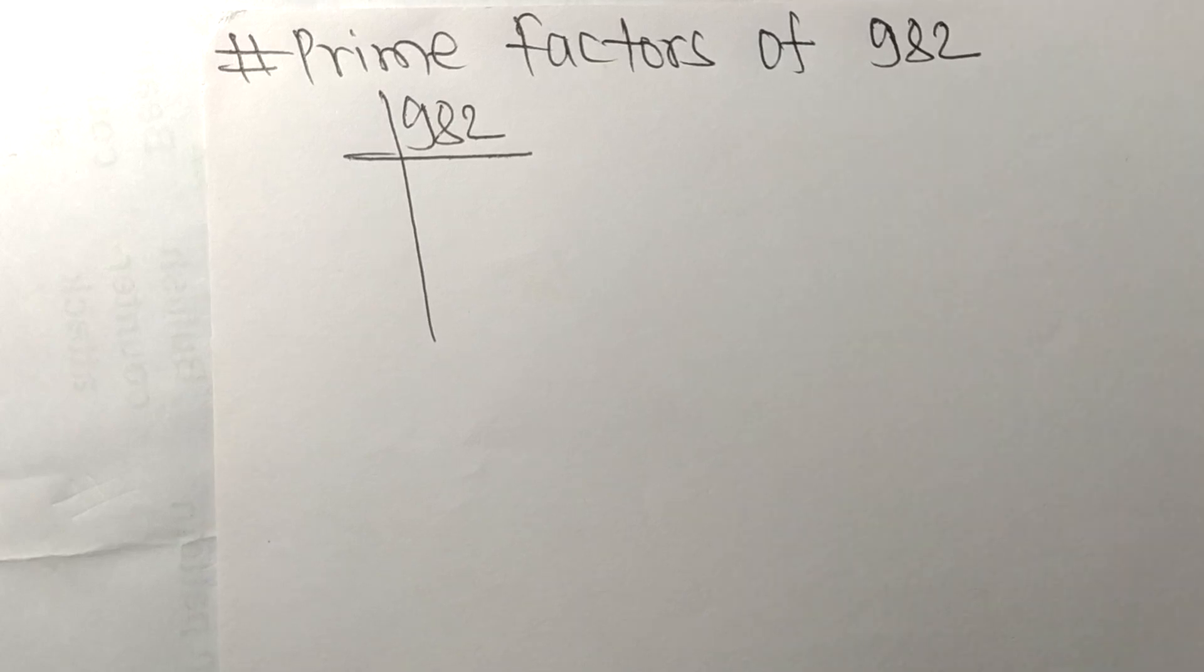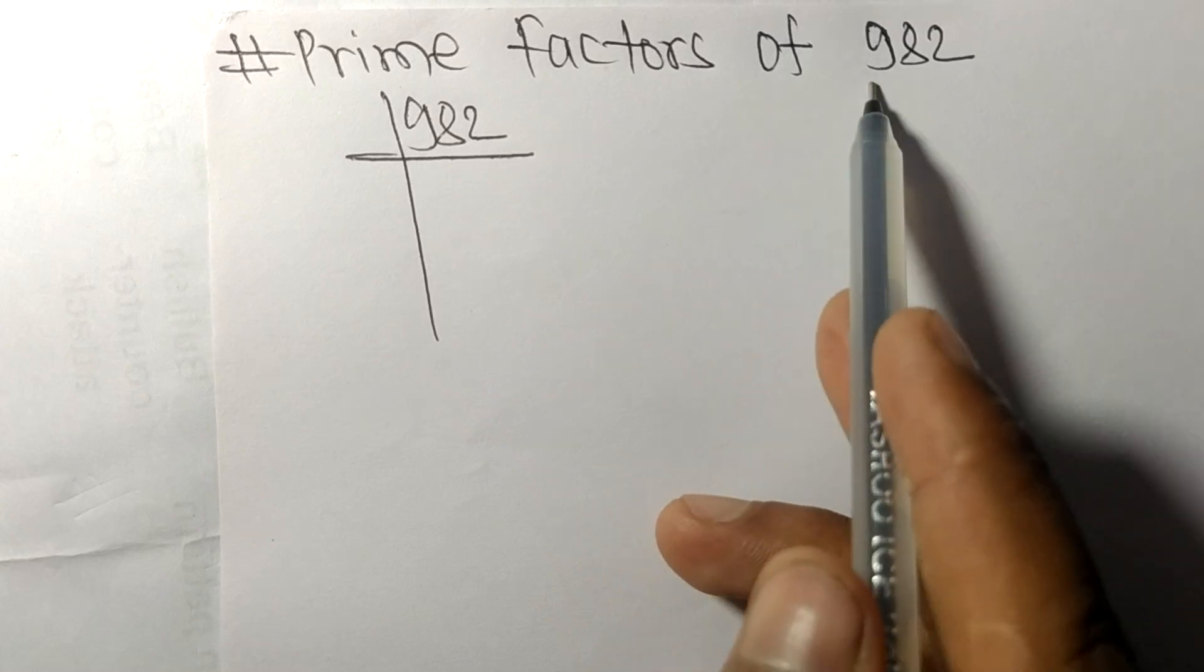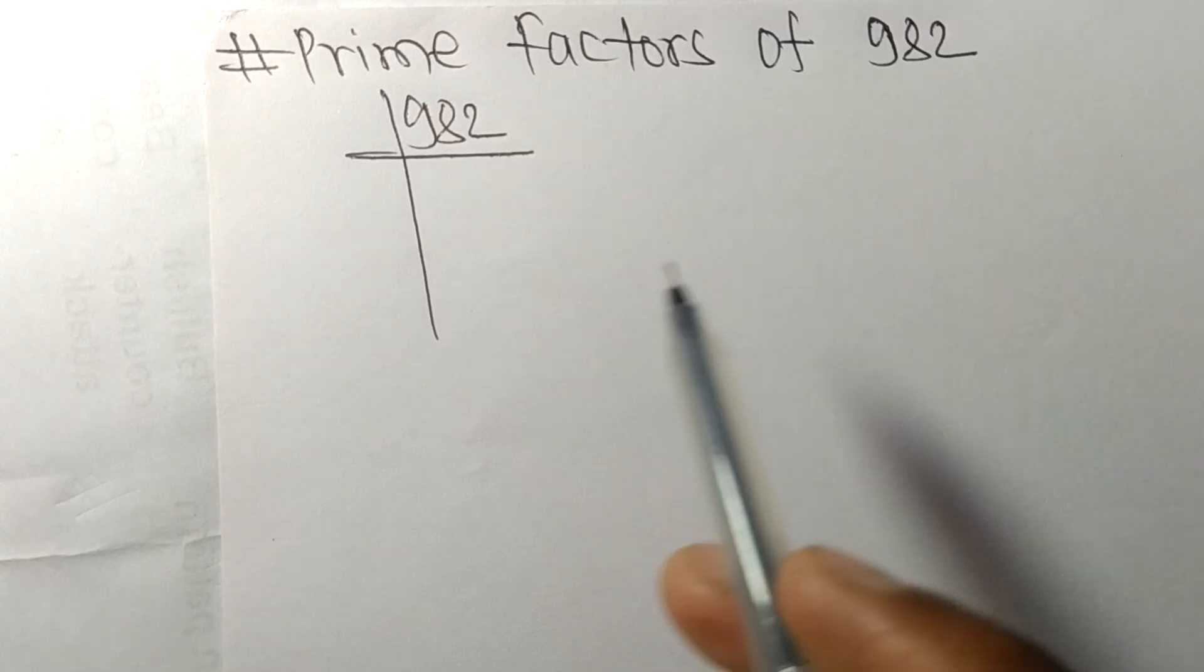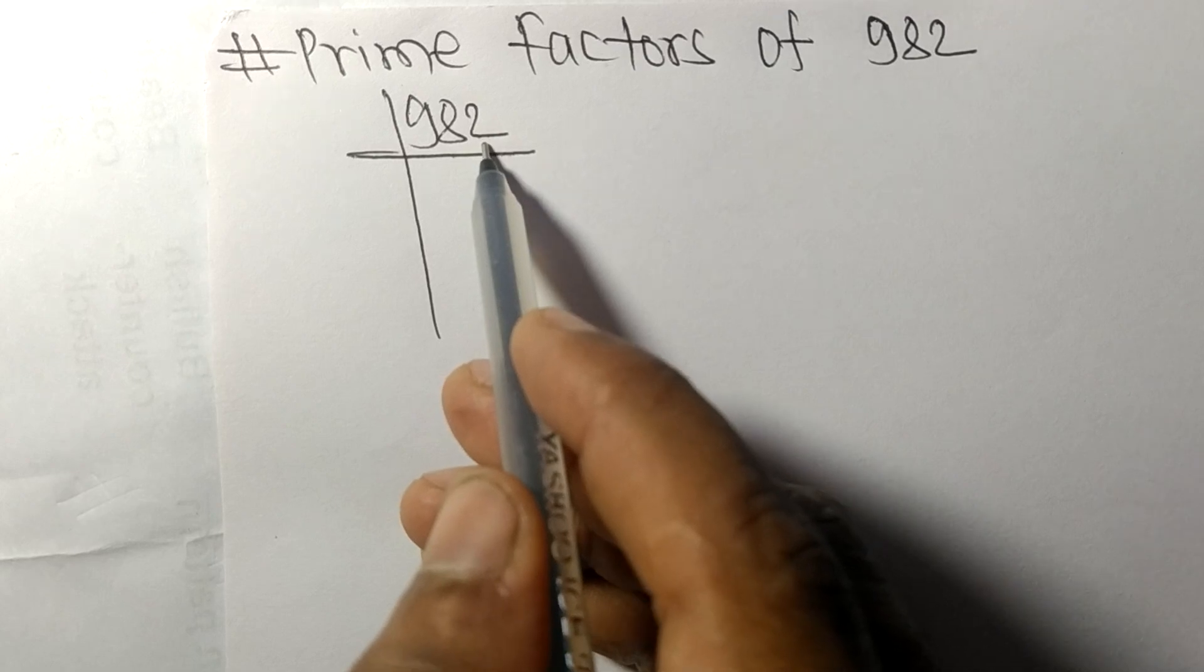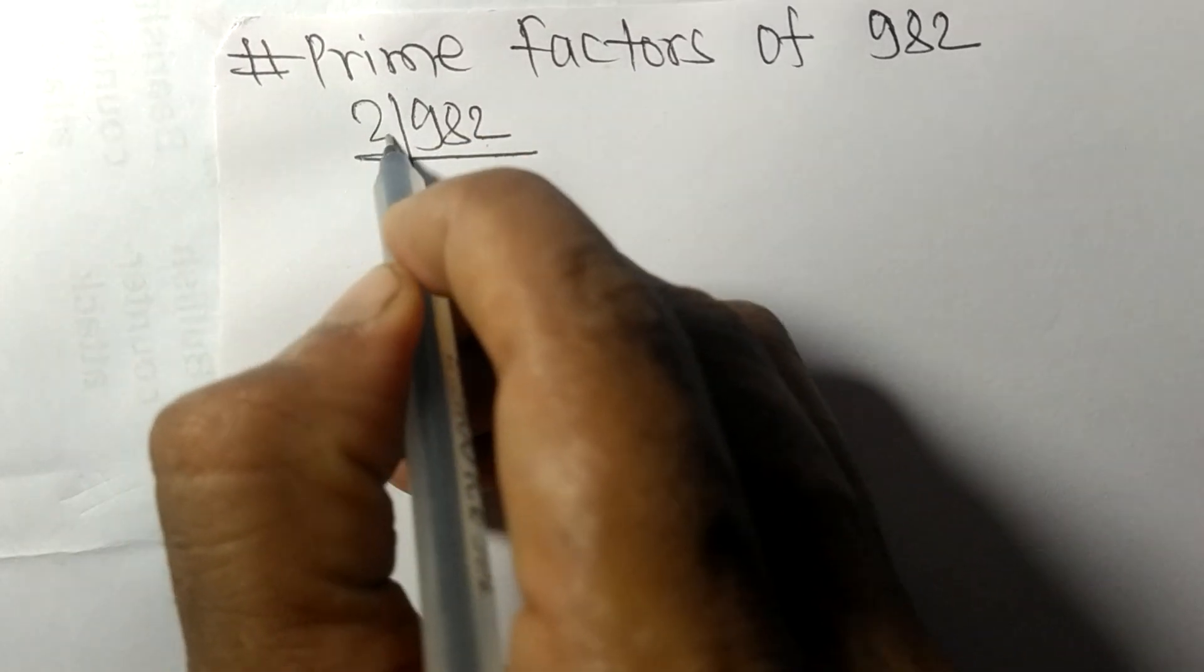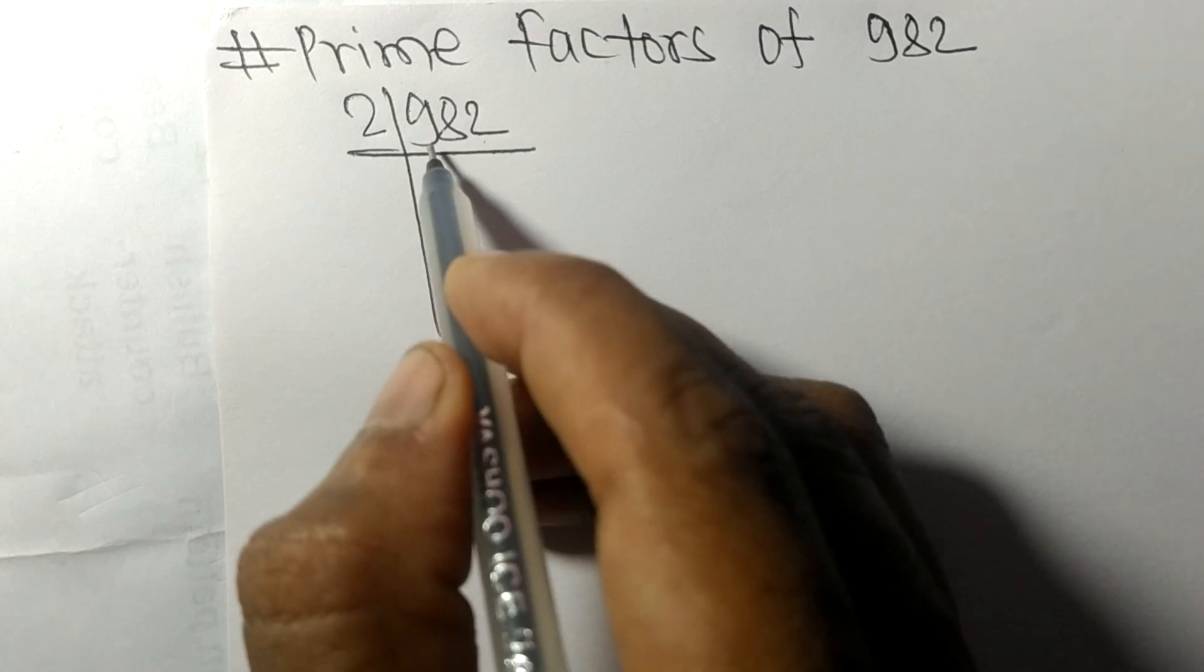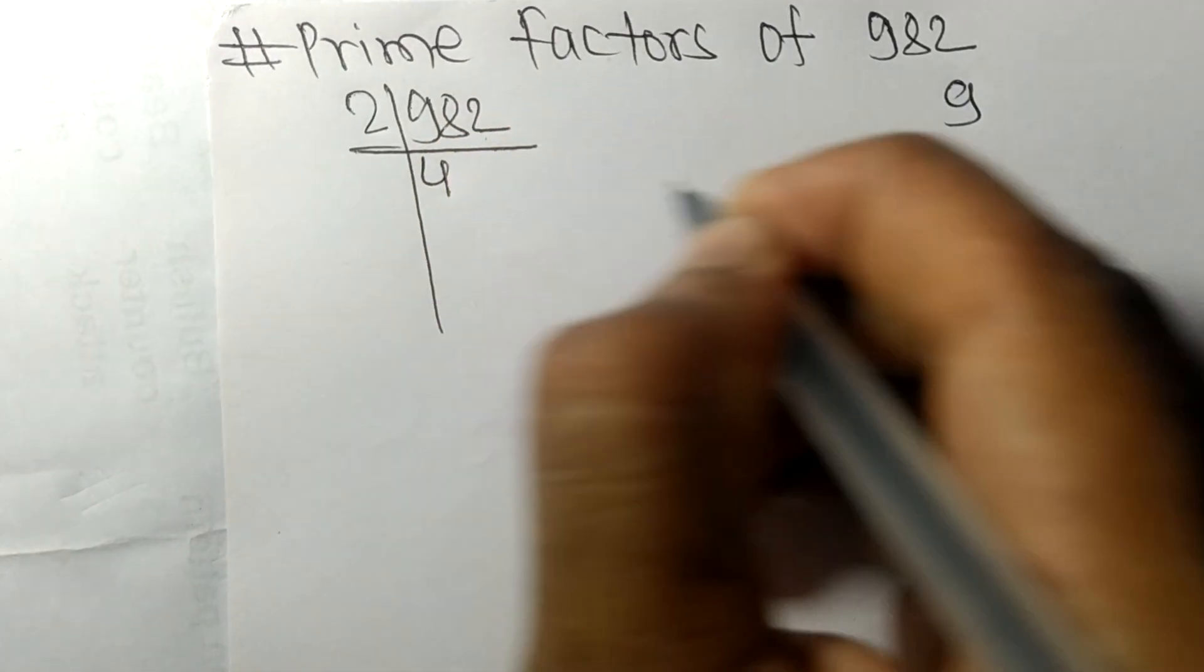Today in this video we shall learn to find the prime factors of 982. It contains an even number at the end, so this whole number is divisible by 2. First we have 9, so 2 times 4 forms 8.